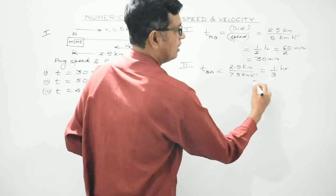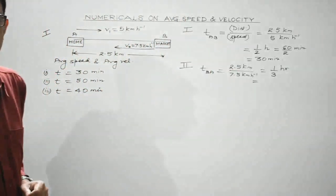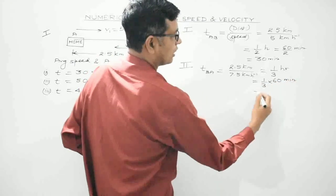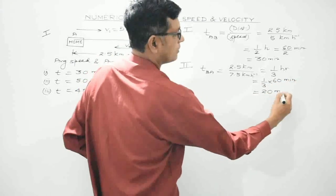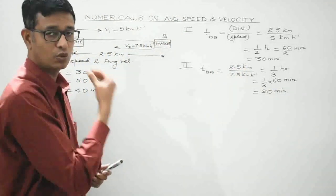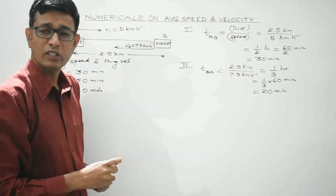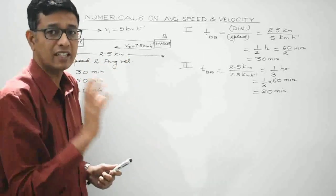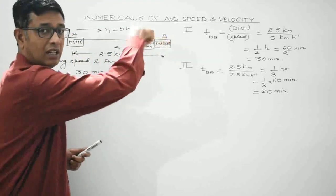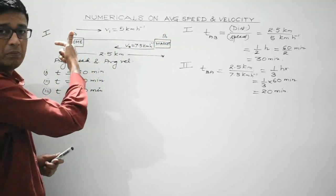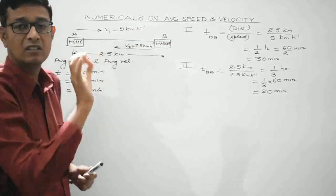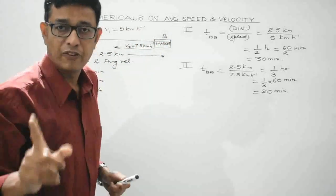Converting 1/3 hour to minutes: 1/3 × 60 = 20 minutes. So while coming back at greater speed, he takes 20 minutes. The total journey duration is 30 + 20 = 50 minutes.